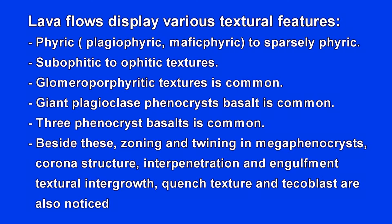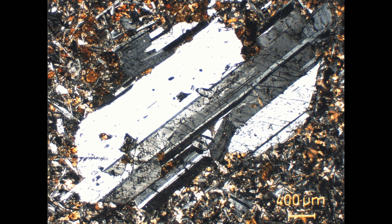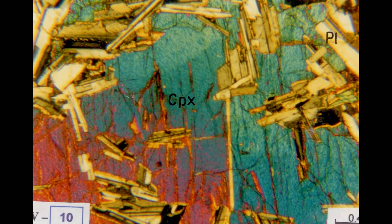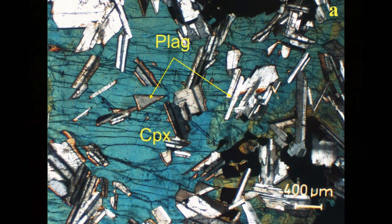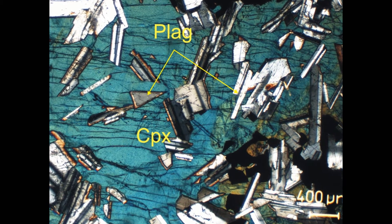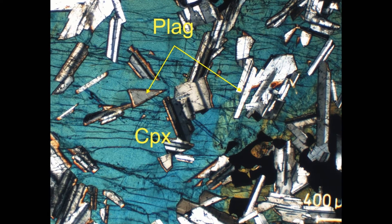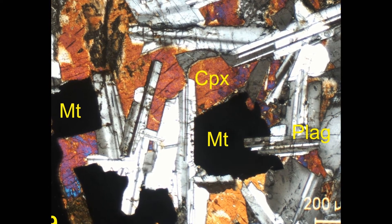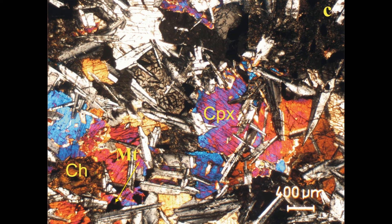Lava flows display a variety of textural features such as phyric. Phyric means you have large-size crystals. If you have large-size plagioclase crystals, we call it plagiophyric. If you have large-size augite crystals, we call it maphic phyric. These rocks also display ophitic texture — a large-size crystal encloses smaller, tiny crystals within it. When crystals are only partly enclosed, we apply the term sub-ophitic texture.